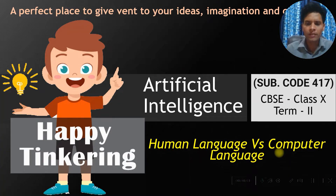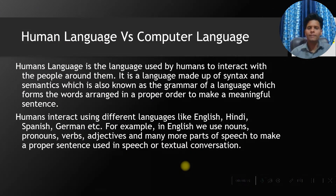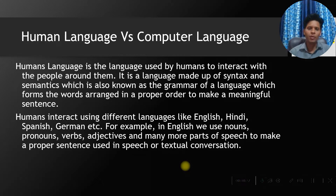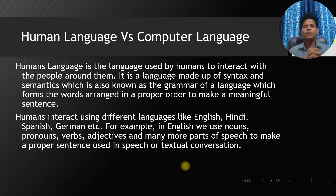Today's topic is human language versus computer language. Human language is a language used by humans to interact with the people around them. It is made up of syntax and semantics, which form the grammar of the language — the arrangement of words in a proper order to make a meaningful sentence. Whatever language we use for communication, whether English, Sanskrit, or French, is considered a human language.